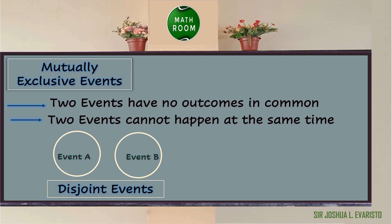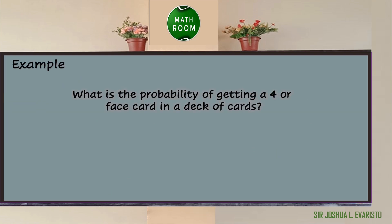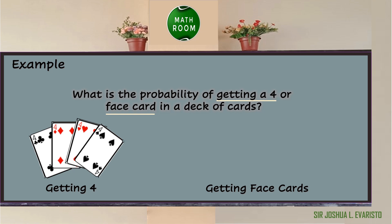In mutually exclusive events, the probability that either A or B occurs is equal to the probability of A plus the probability of B. Let's have an example. What is the probability of getting a 4 or face card in a deck of cards? The two events are: event A is getting a 4 and event B is getting a face card. The possible outcomes of event A are 4 of clubs, 4 of diamond, 4 of heart, and 4 of spade.